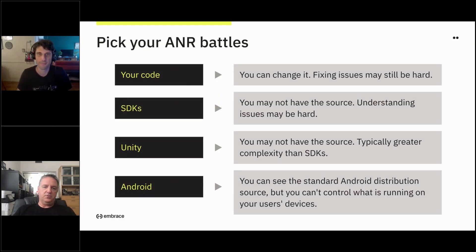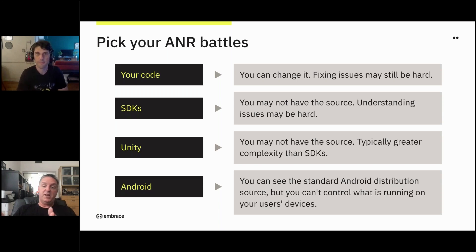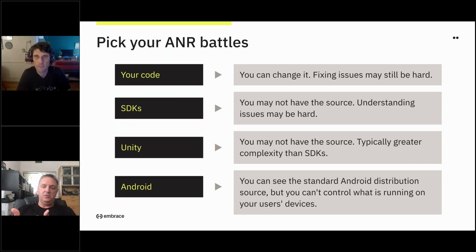So what data can you get to solve ANRs? Pick your battles. If you can figure out that the ANR is in your code, great — you have the most ability to change it. We find that a lot of ANRs come out of SDKs, specifically ad SDKs. There you may have some ability to change things: how you're using it, how you're initializing it, or where in your code you're using it. We've definitely been able to help folks reduce ANR rates by how they use SDKs slightly differently.